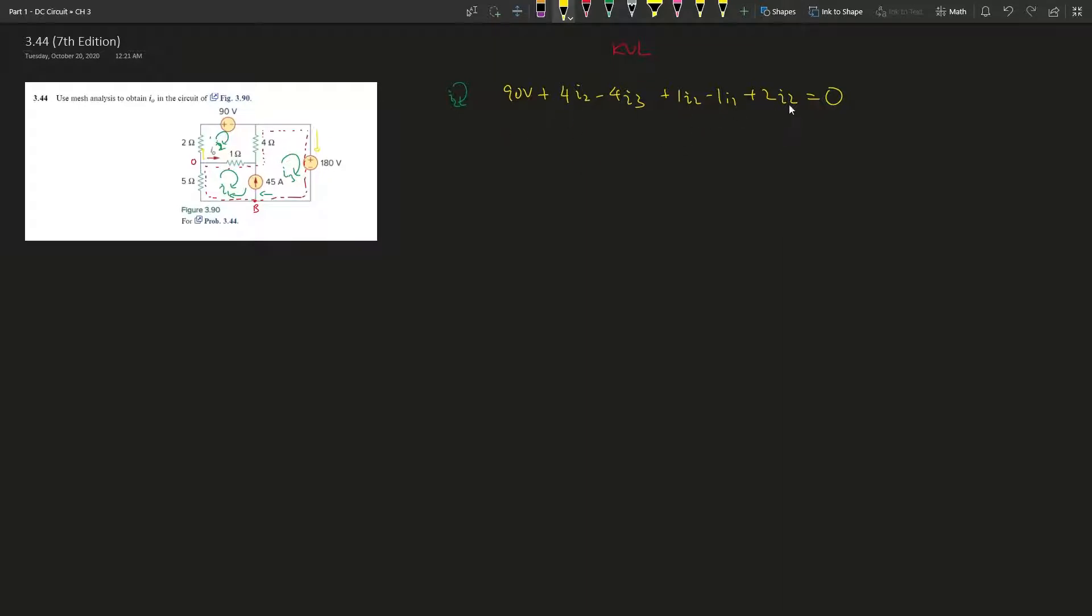When we're applying, we're doing the Kirchhoff voltage law. Because ohms times current, that gives us voltage. And how do we determine this is positive and this is negative? It depends on which mesh we're looking at.